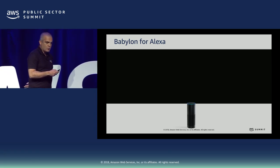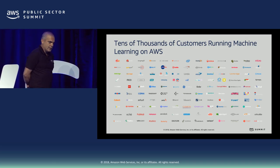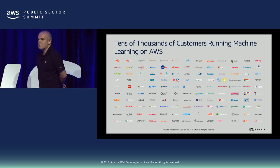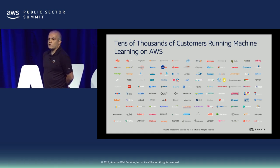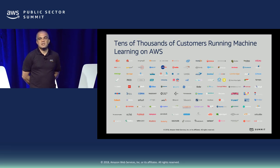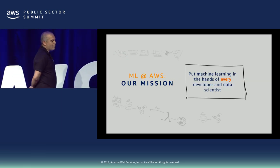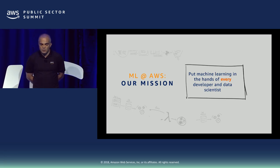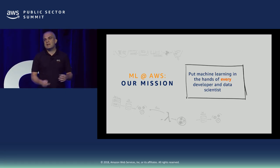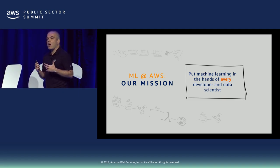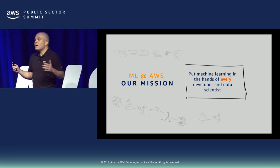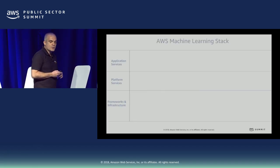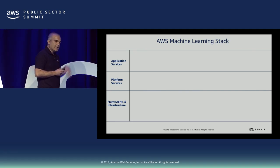Babylon is just one customer. We have tens of thousands of customers running machine learning today in different areas like government, financial industry, retail, and more — machine learning is everywhere. Our mission at Amazon is to put machine learning in the hands of everybody, because we don't believe data scientists should be the only ones using this technology. As soon as all developers have access to the same solutions, the scale and society will be able to leverage this much better. Amazon organizes these offerings into three different categories.